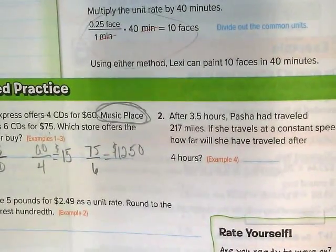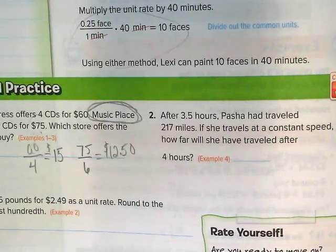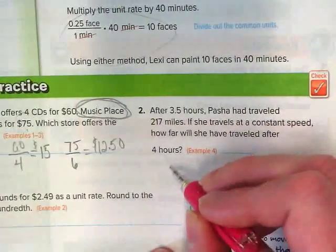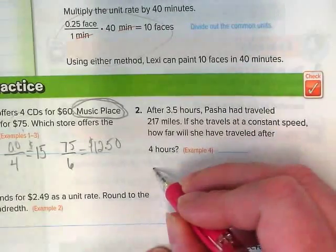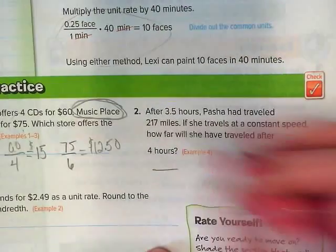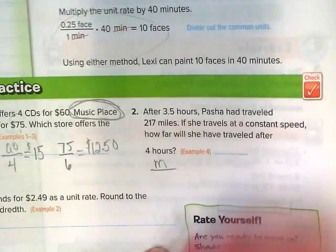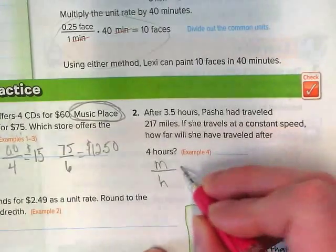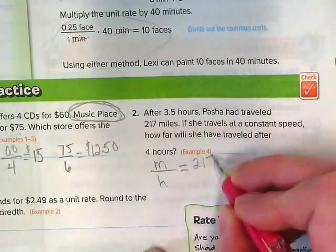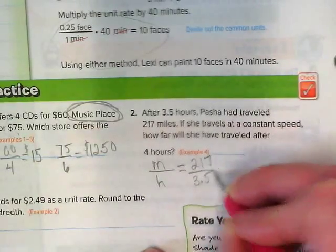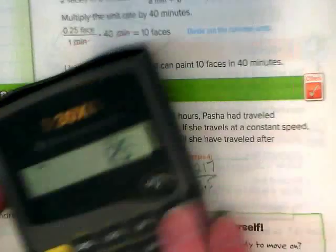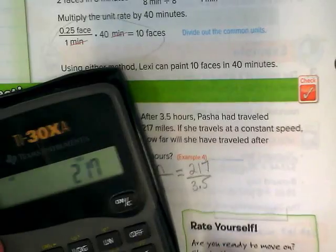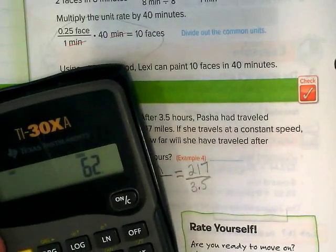Number two. After three and a half hours, Pasha has traveled 217 miles. If she travels at a constant speed, how far will she have traveled in four hours? Well, what always goes on top when we're dealing with distance and time? The distance always goes on top. So we're going to put the miles up here and the time always goes in the denominator. We have 217 miles in three and a half hours. We need to figure out how much she can do in one hour then.